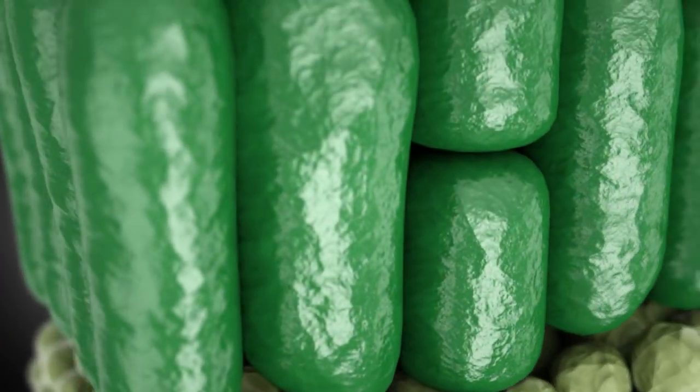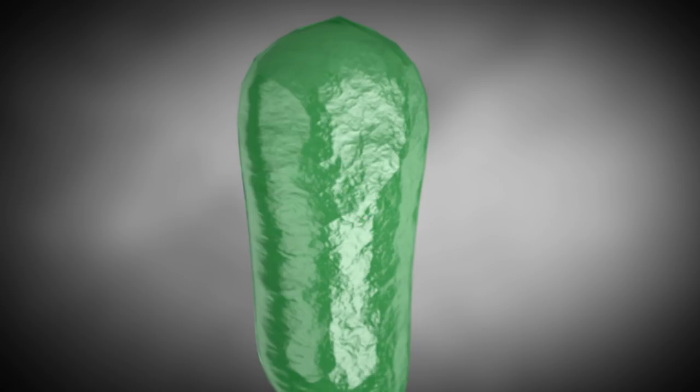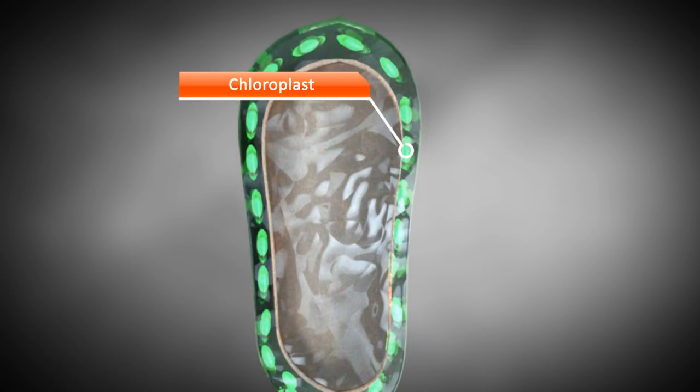The palisade cells can be found on top of these veins. Palisade cells contain many chloroplasts that can be seen here as green dots. Chloroplasts absorb a major portion of the light energy used for photosynthesis. So, let's have a look at one of them.